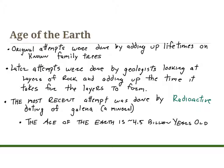For example, if the first rock layer took about 50,000 years to form and a second layer took about 100,000 years, you would add those up to get 150,000 years — meaning that section of the Earth would be that old. That method also wasn't very accurate.